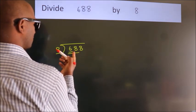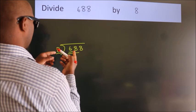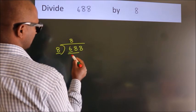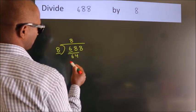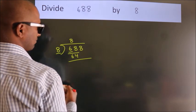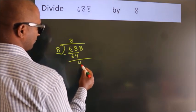A number close to 68 in the 8 table is 8 times 8 equals 64. Now we should subtract, we get 4.